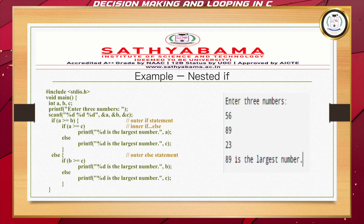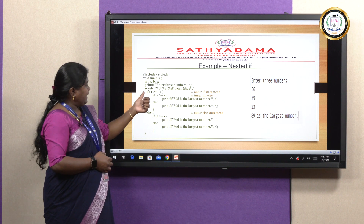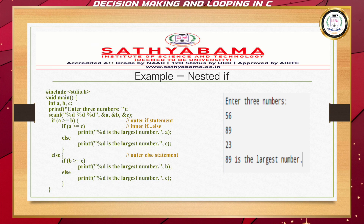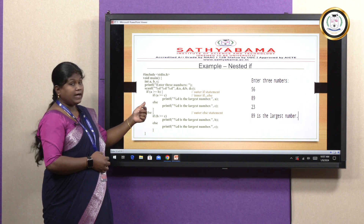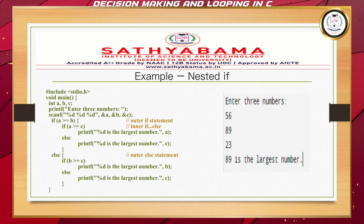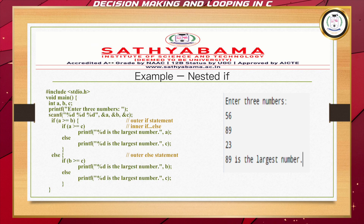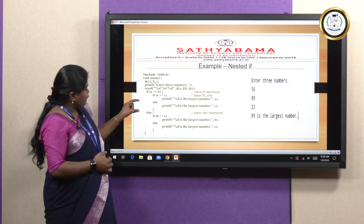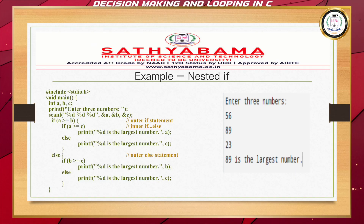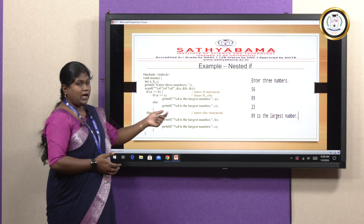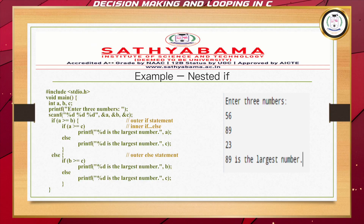The example program finds the biggest among three numbers a, b, c. If a is greater than or equal to b, I check whether a is greater than or equal to c. If both conditions are true, I print 'a is the largest number.' If a is greater than b but not greater than c, I print c is the biggest. In the else part, I check whether b is greater than c — if true, b is big; otherwise c is the biggest. This program illustrates nested if.